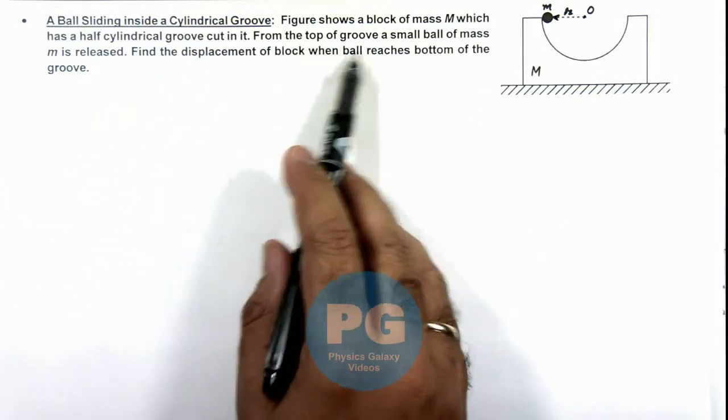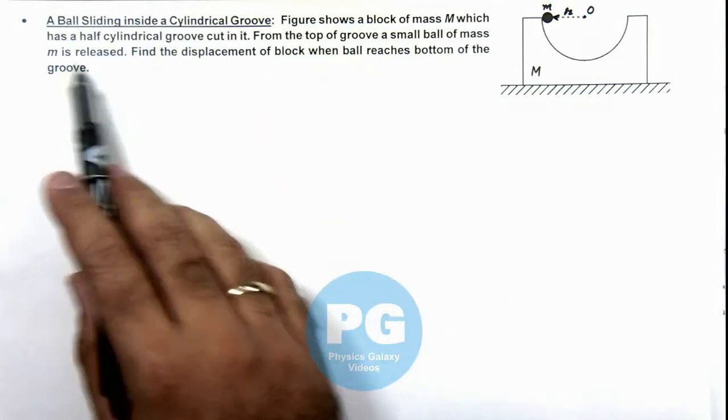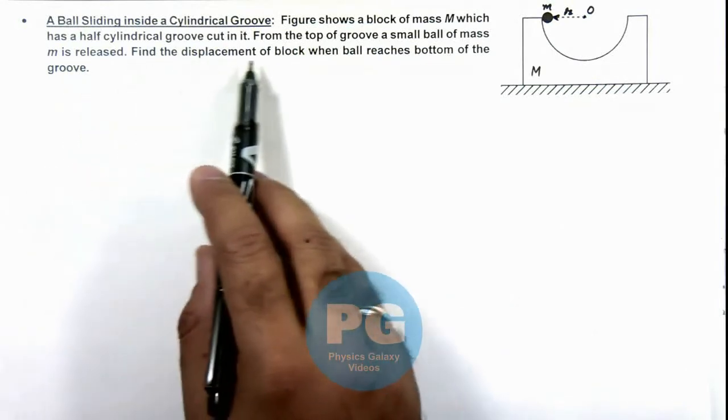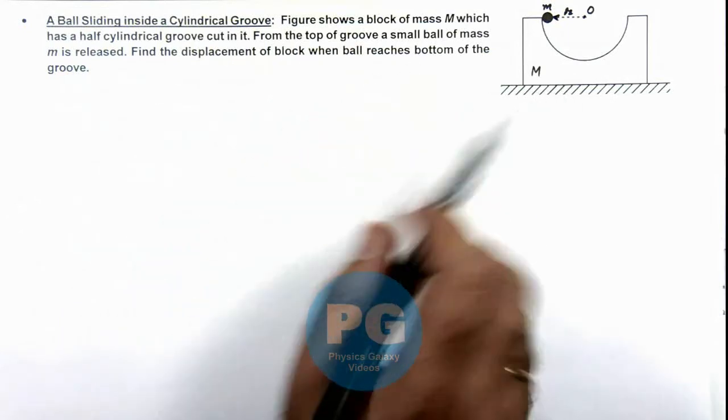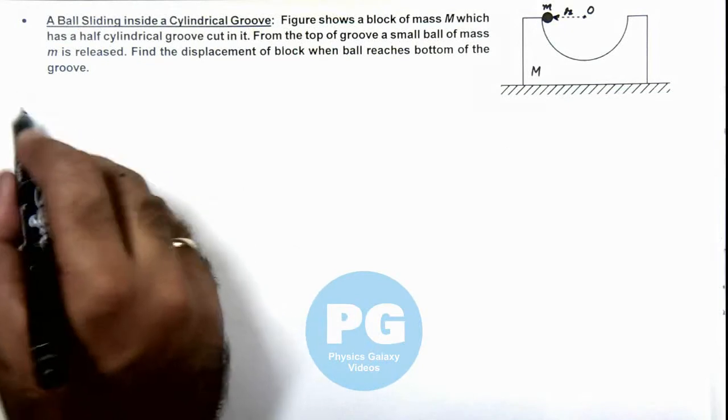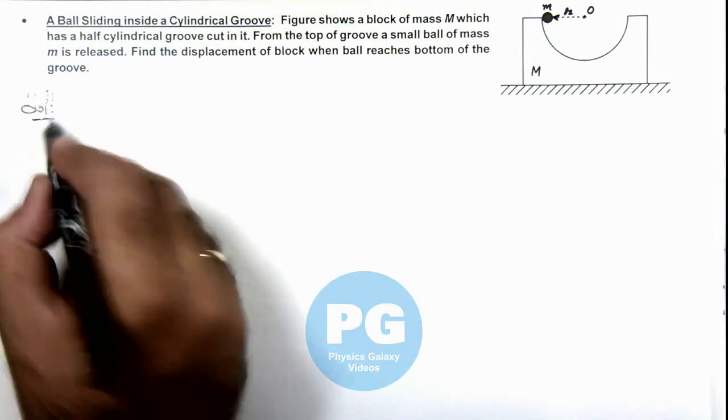From the top of groove a small ball of mass m is released. We are required to find the displacement of block when ball reaches bottom of this groove.